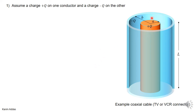For this problem, we have an inner conducting cylindrical conductor with a charge plus Q and radius a, and then we have a conducting shell with radius b. We put a charge minus Q on this outer cylindrical conducting shell, and the total length of this conductor is L.